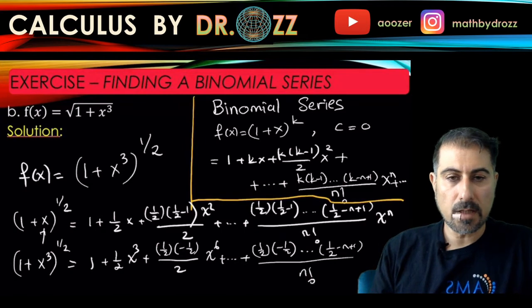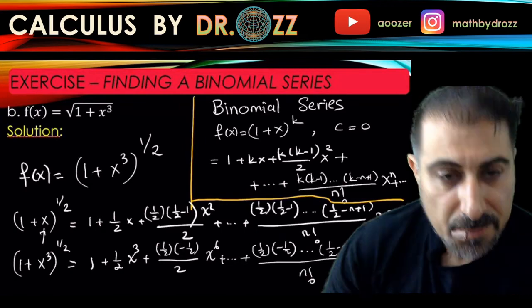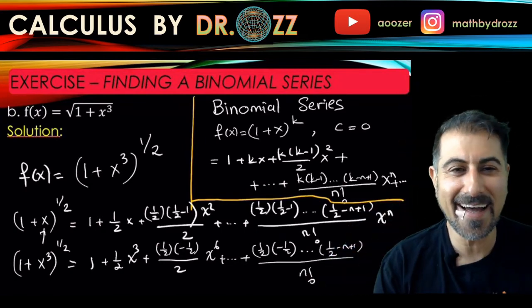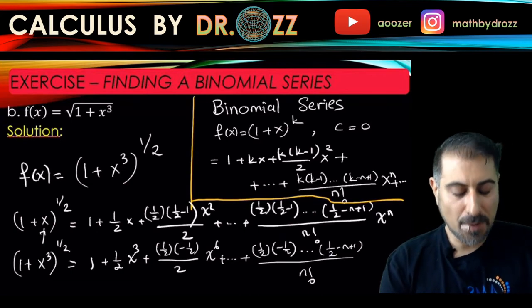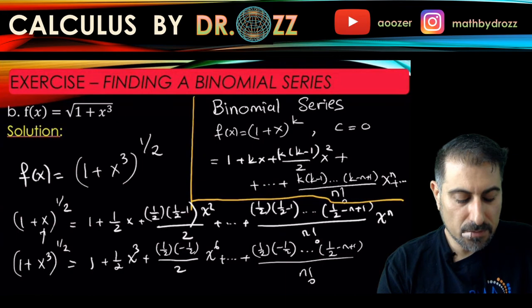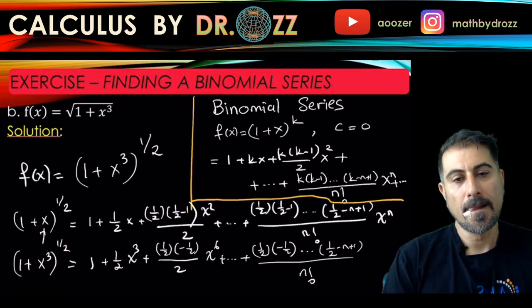I think we're running out of space, maybe I should move myself. Alright, so (x³)^n, that makes it x^(3n). And at this moment...